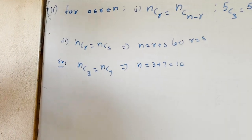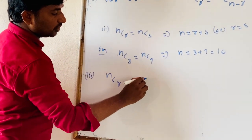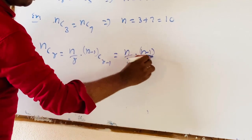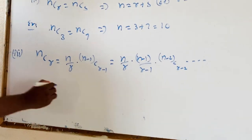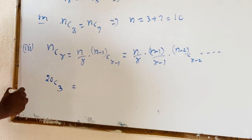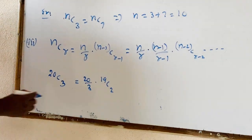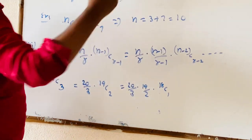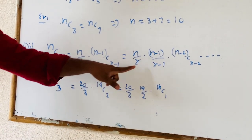Another formula: NCR = (N/R) × N−1C(R−1), or equivalently NCR = (N/R) × (N−1)/(R−1) × N−2C(R−2) and so on. For example, 20C3 = (20/3) × 19C2, or 20C3 = (20/3) × (19/2) × 18C1.